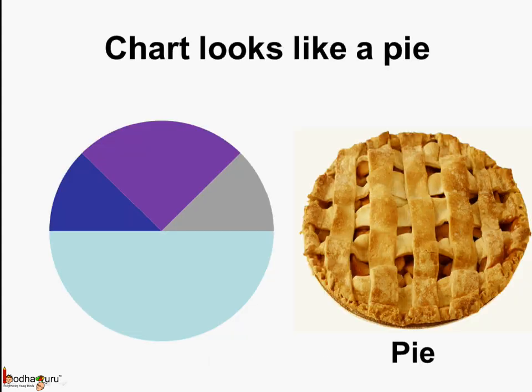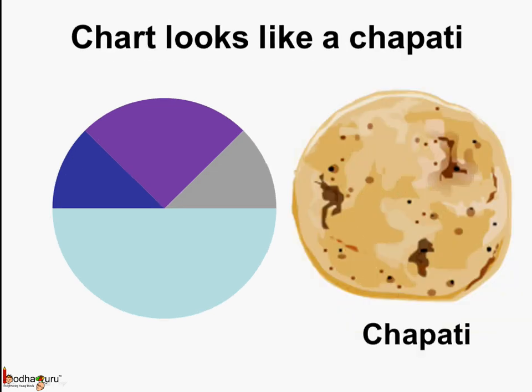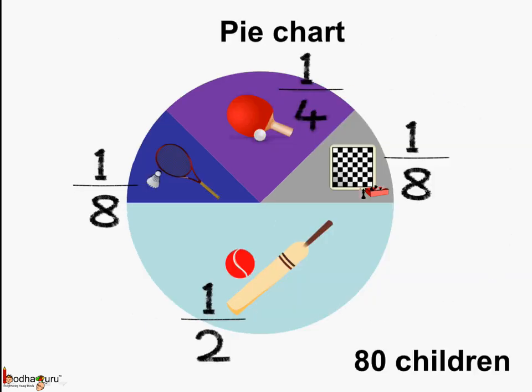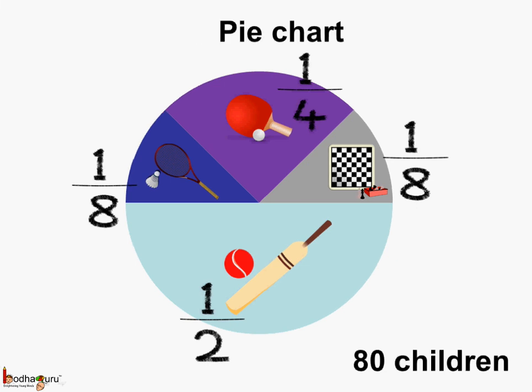If we look at this chart, doesn't it look like a pie? It is round like a pie — some people also say this chart looks like a round chapati. That is why it is called a pie chart. When we represent data in the form of a circle, it is called a pie chart, or you may also call it a chapati chart. You can represent data as different fractions of a whole, which is the circle here. So a pie chart is one way of representing data.